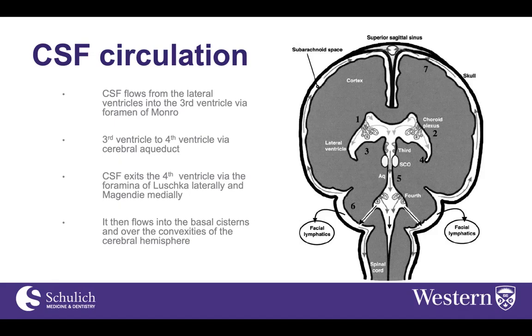From the fourth ventricle, CSF exits either midline through the foramen of Magendie or laterally through the foramen of Luschka into the subarachnoid space, where it flows through the basal cisterns and then through the convexities of the cerebral hemispheres.